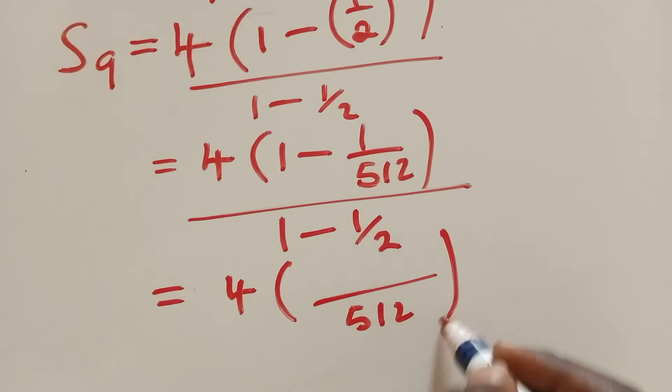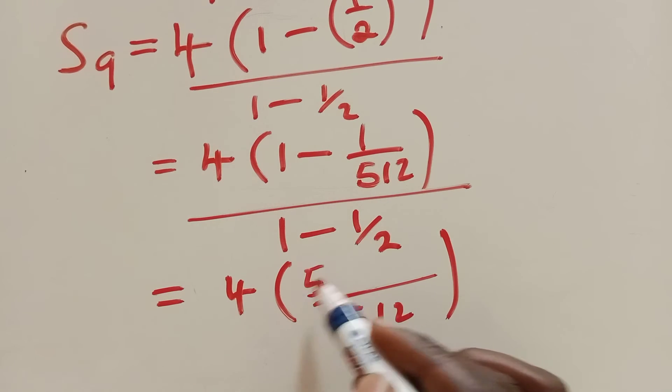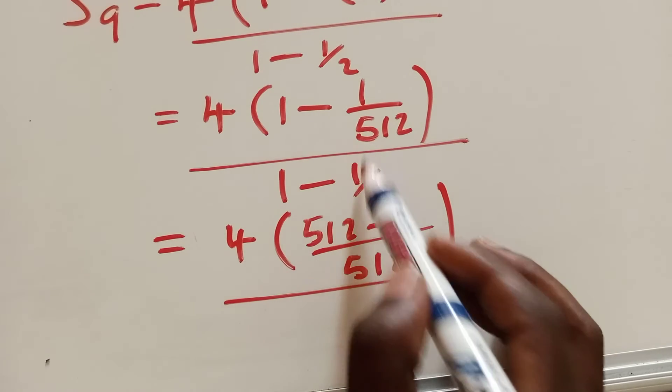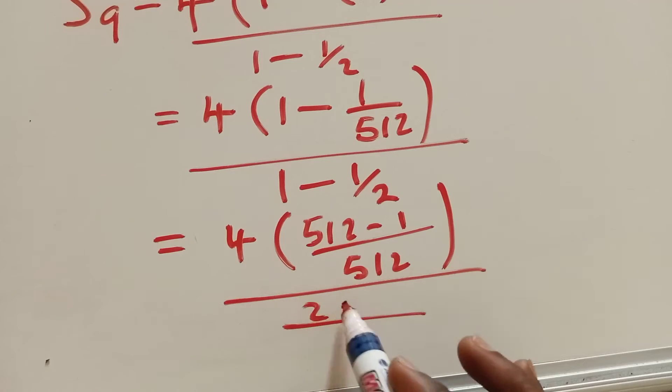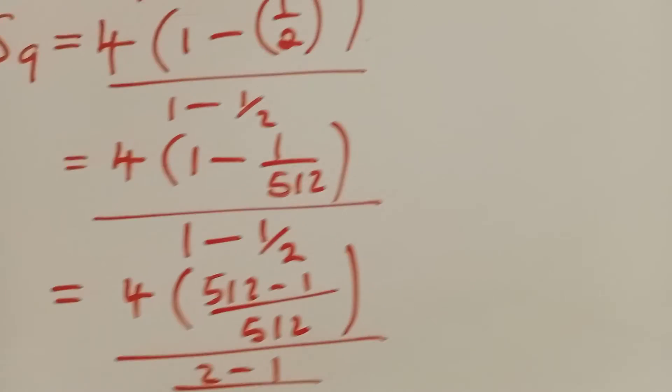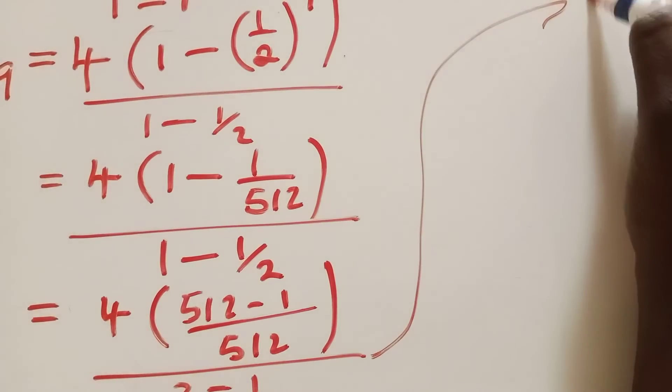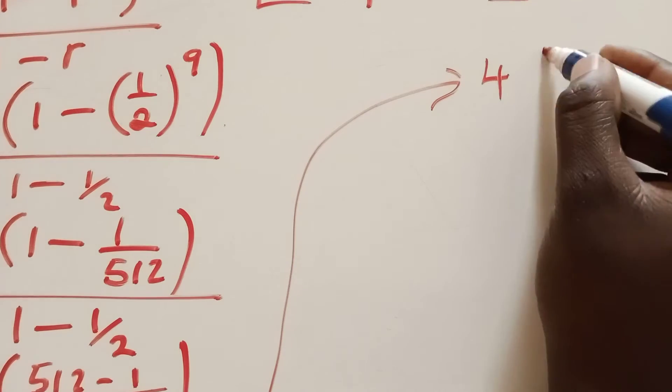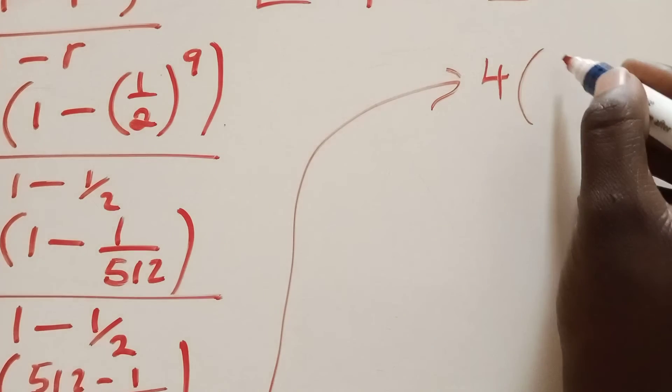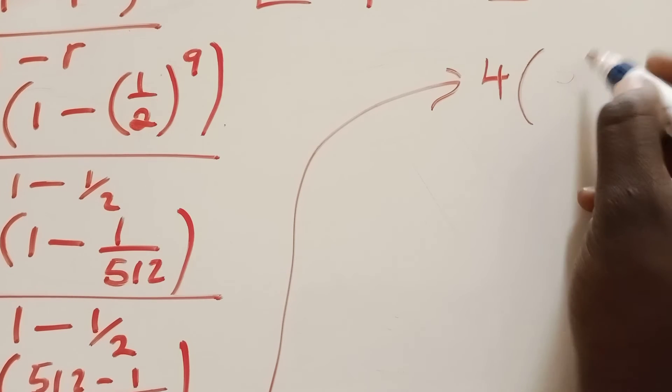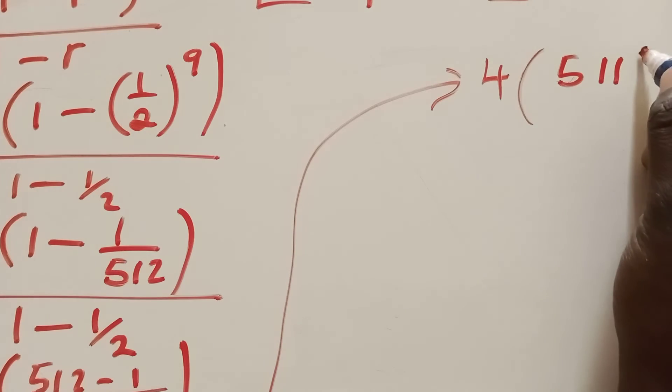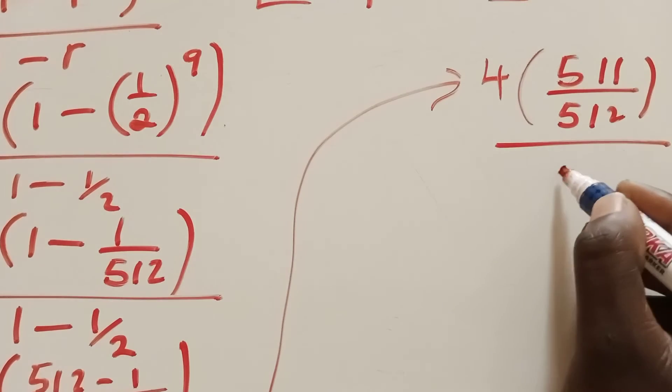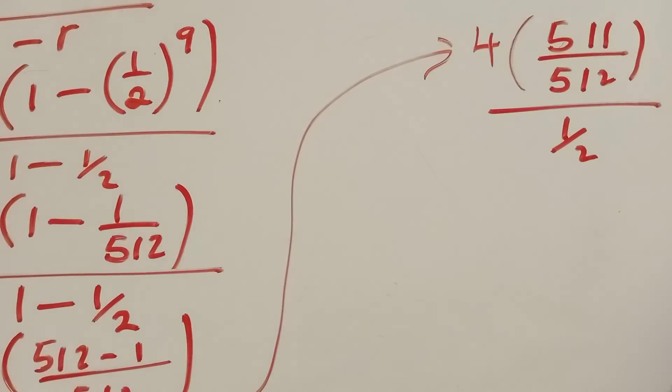Here, we can work out things. Inside the brackets here, we find the common denominator, which is 512 on top here. So here, it will be 512 minus 1, over common denominator here is 2, so it will be 2 minus 1 here. So we can work out things. So it will give us 4, when we say 512 minus 1, it will just be 511 over 512 over 1 over 2.